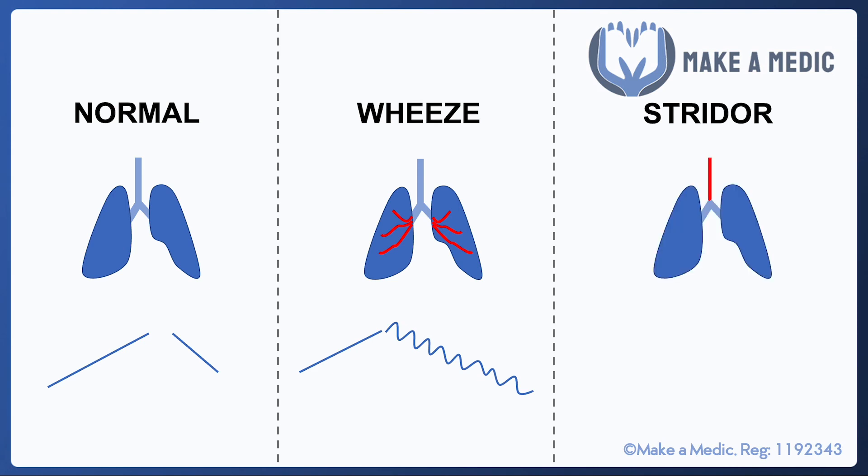Stridor, on the other hand, is caused by upper airway obstruction or narrowing — such as in croup — and primarily produces a harsh sound when the patient takes a deep breath in. It may also cause an abnormal sound on expiration, but it is primarily an inspiratory noise.